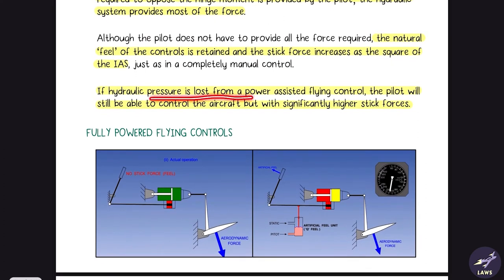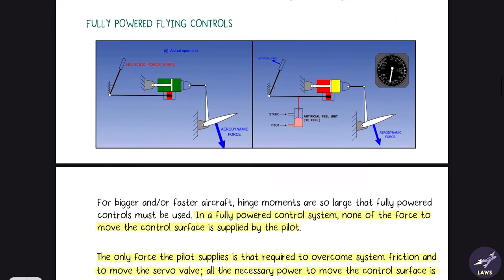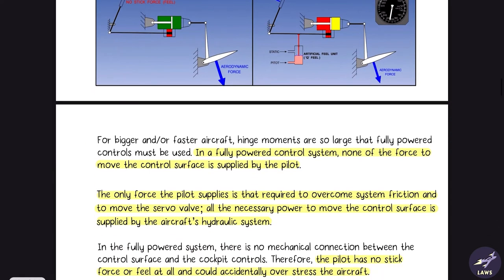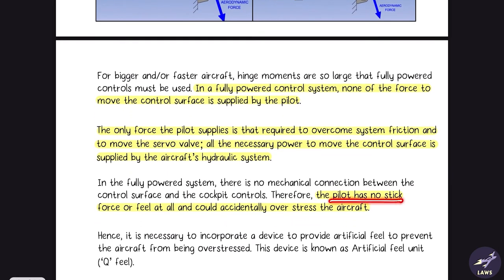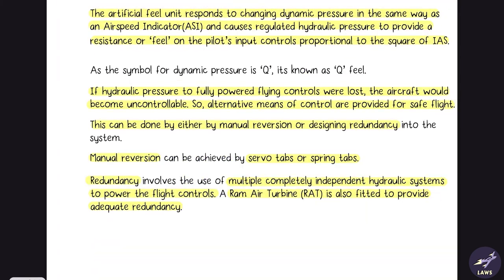If hydraulic pressure is lost from the power assisted flying control, the pilot will still be able to control the aircraft, but with significantly higher stick forces. With fully powered flying controls, all the force is provided by the hydraulic system — none by the pilot. In this case, the pilot has no stick force or feel and could accidentally overstress the aircraft, so it is necessary to incorporate an artificial feel unit to prevent overstressing.